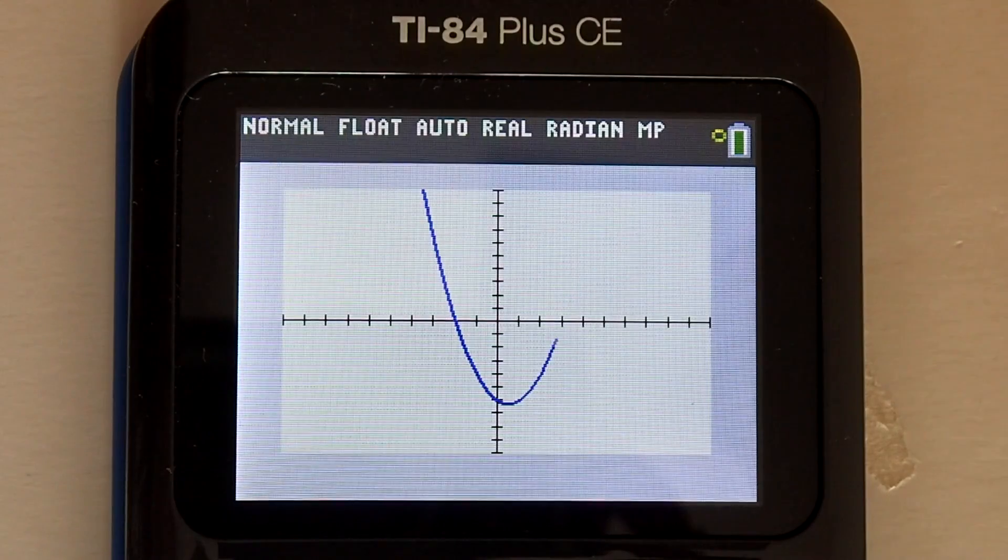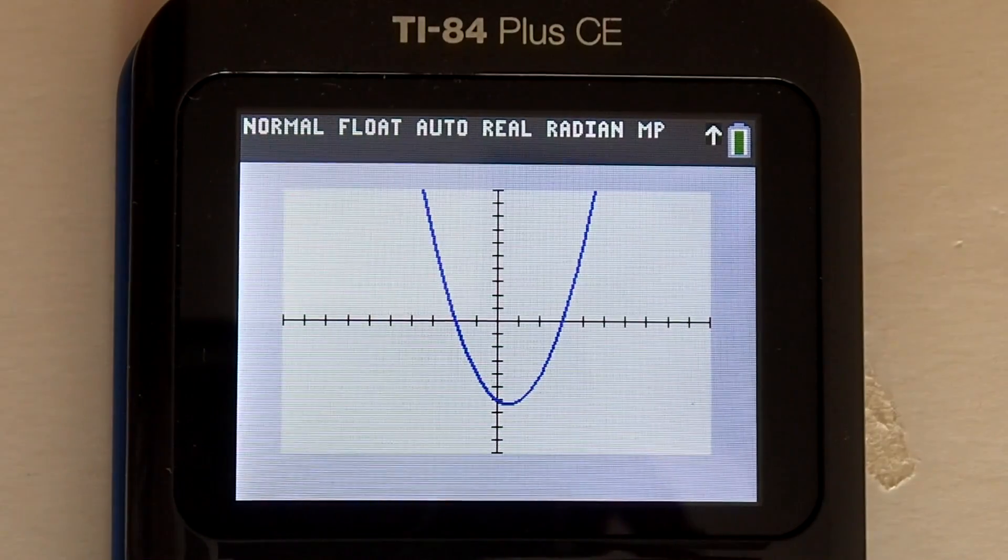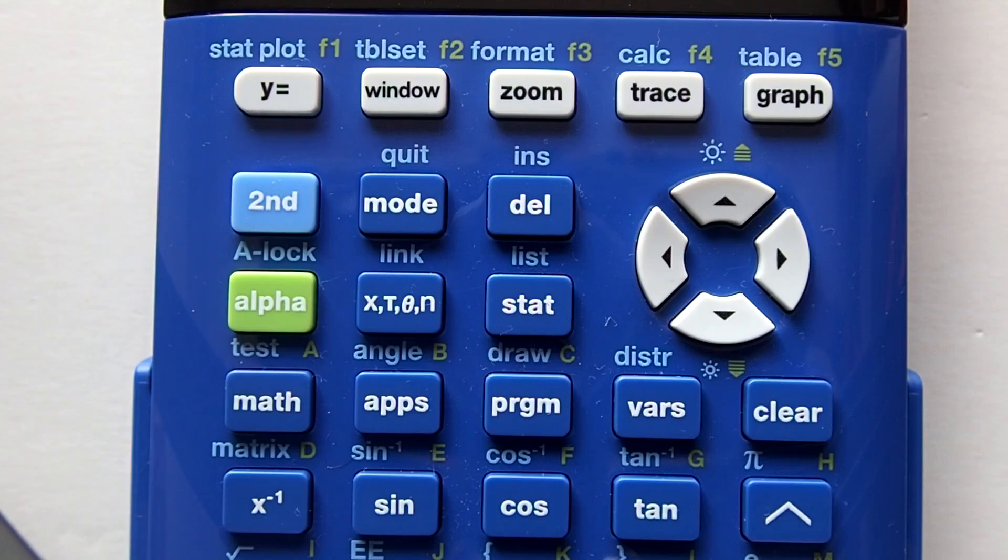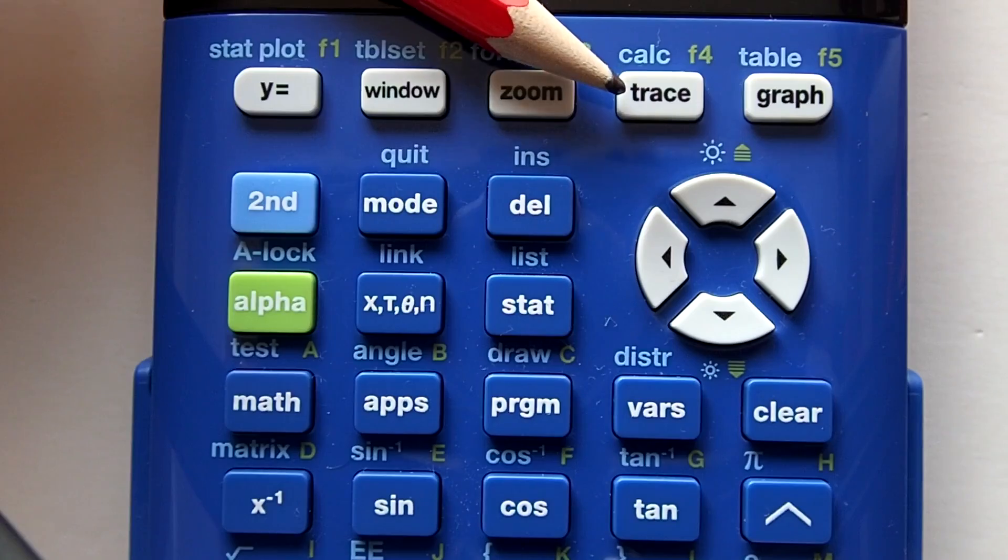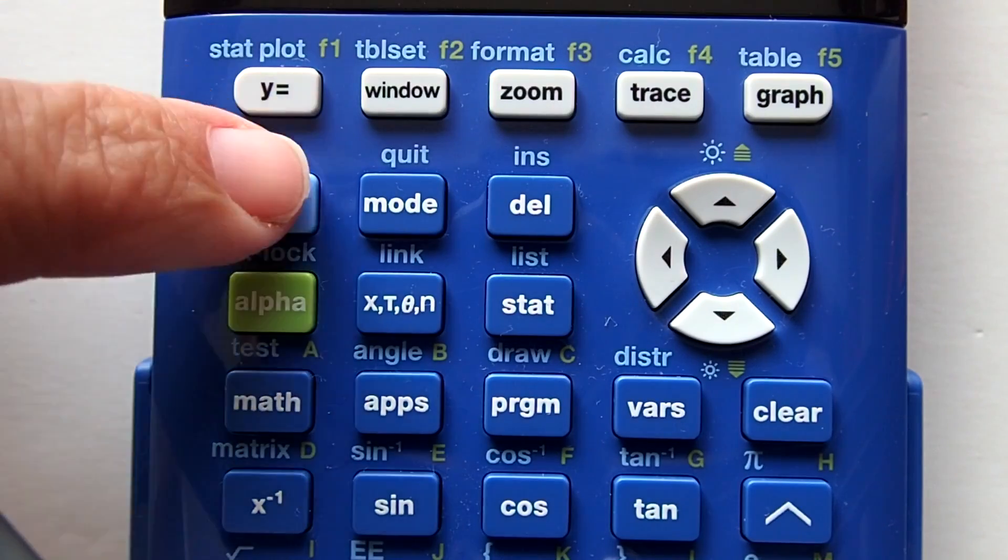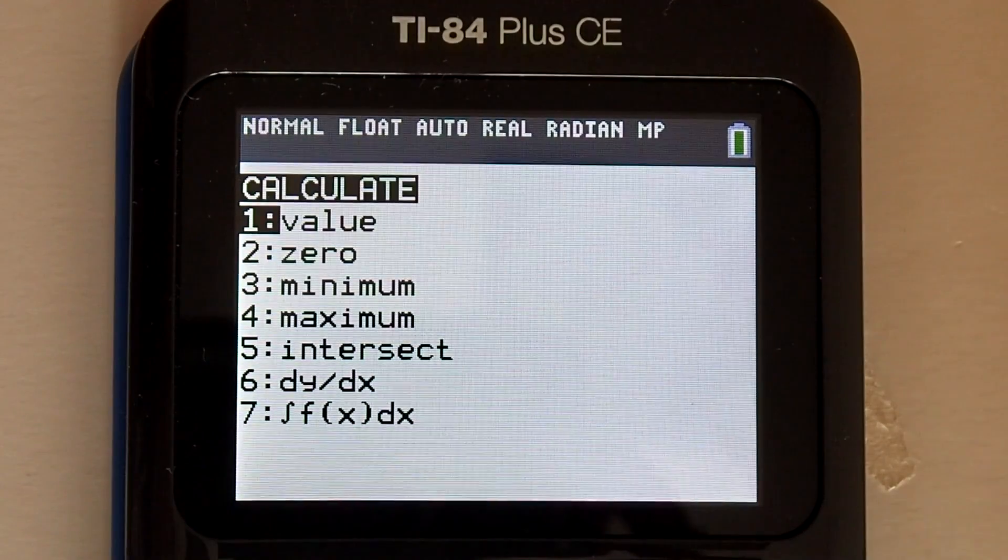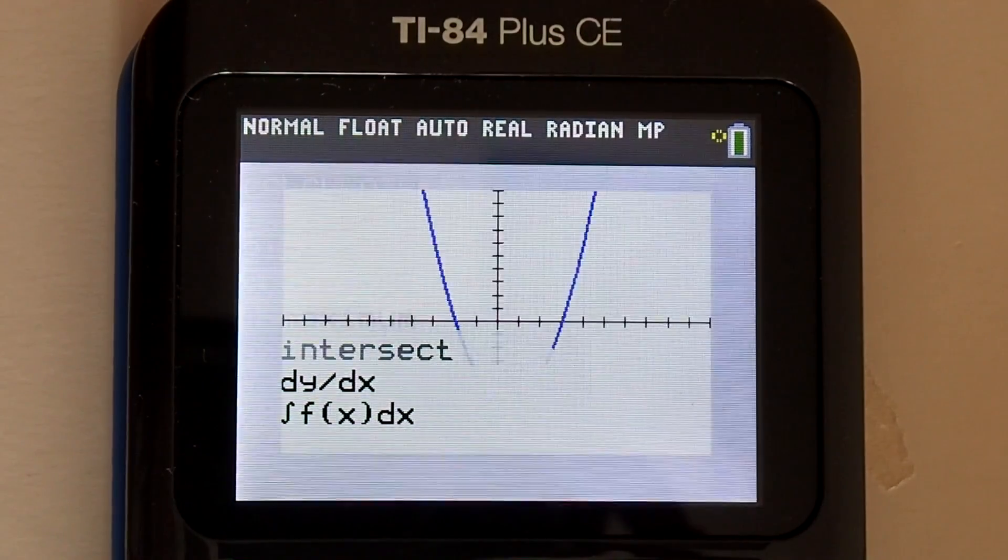Now you can do a visual and see that the graph crosses the x axis at negative 2 and positive 3. Those would be our x intercepts. But we want to get a confirmation from the calculator. So next step is to press the second key here. Then the trace key here. This brings up this calculate window. Go to number 2, 0. Press enter.